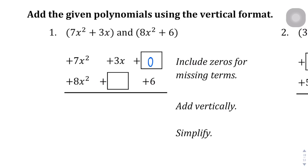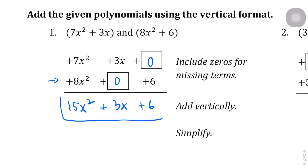In this second row, x squared doesn't have a term with just an x in it, so we're going to put 0 there. Then we just add straight down. 7x squared and 8x gives us 15x squared. 3x plus 0 gives us 3x. And 0 plus 6 is just 6. So this ends up being our simplified expression.